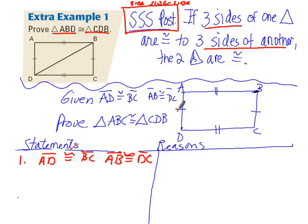is congruent to DC. We can see that with our tick marks right on here. We have the double tick marks for those two sides that are congruent, and that's given. The second step, we should have this diagonal here.